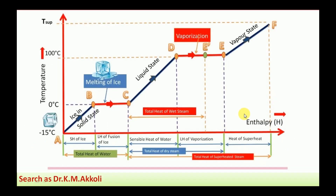Next we are going to discuss the temperature-enthalpy diagram, where temperature is in degree Celsius and enthalpy is taken as H. From the ice state we are going to consider starting at minus 15 degree Celsius, though the steam formation starts from 0 degree Celsius to the superheated steam temperature.